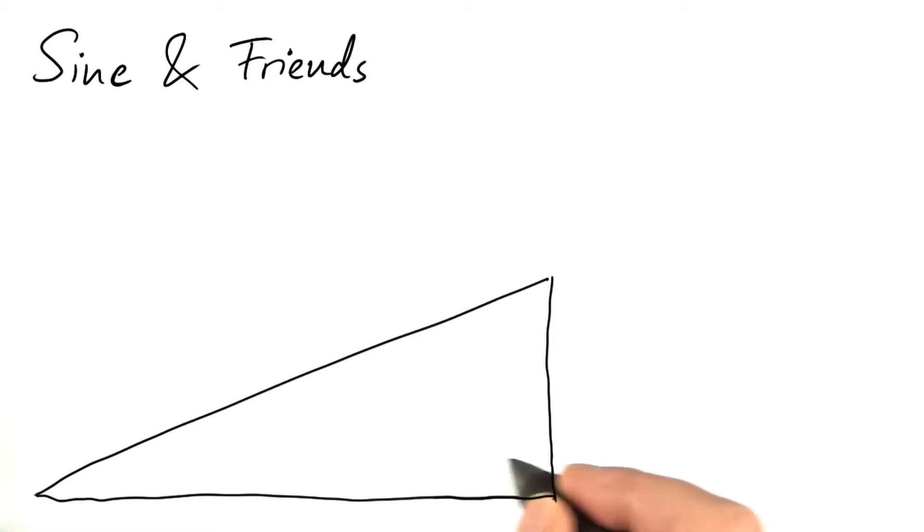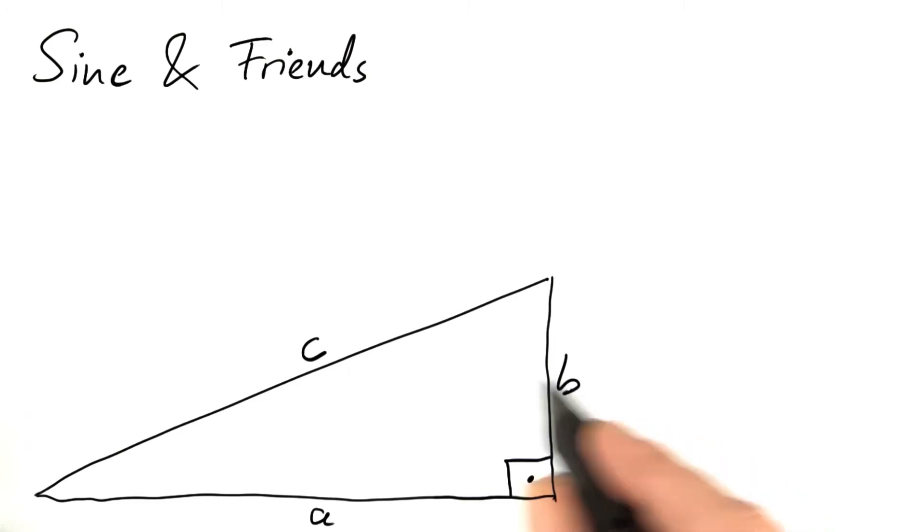Sine and cosine and their friends are about right triangles. This is a right triangle, a triangle that has a right angle. A and B are the legs of the right triangle. C is the hypotenuse.